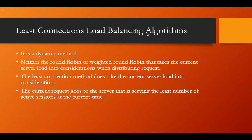Let's discuss the least connections load balancing algorithm. The previous two algorithms — round robin and weighted round robin — are static algorithms, meaning decisions are not based on the current scenario but on static assumptions. They do not consider the current server load when distributing requests. Least connections uses a dynamic method and considers the current, real-time scenario.